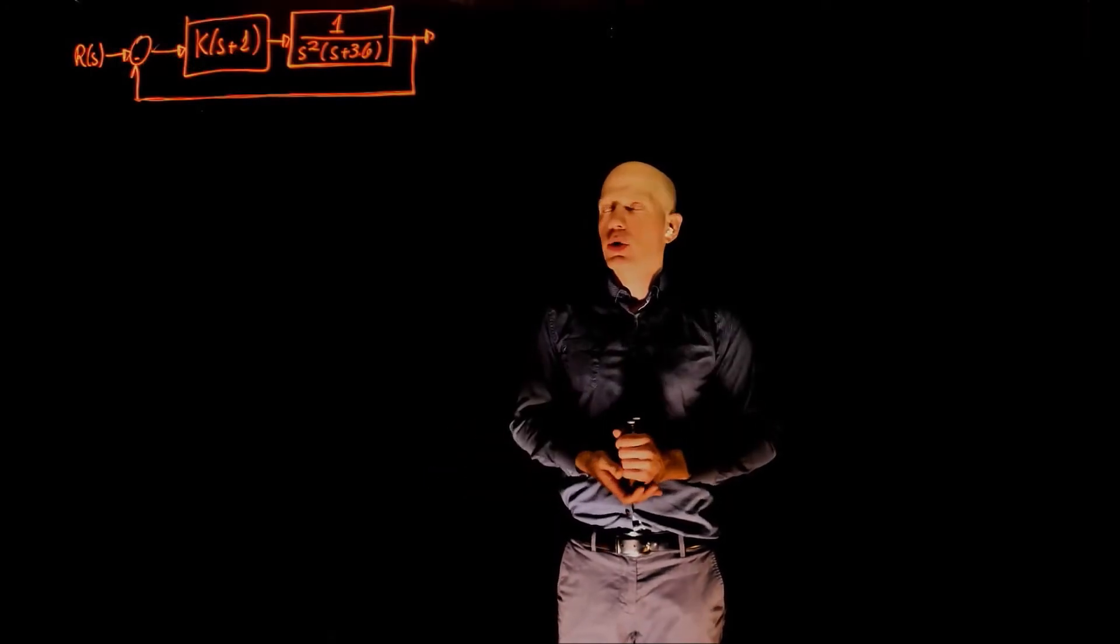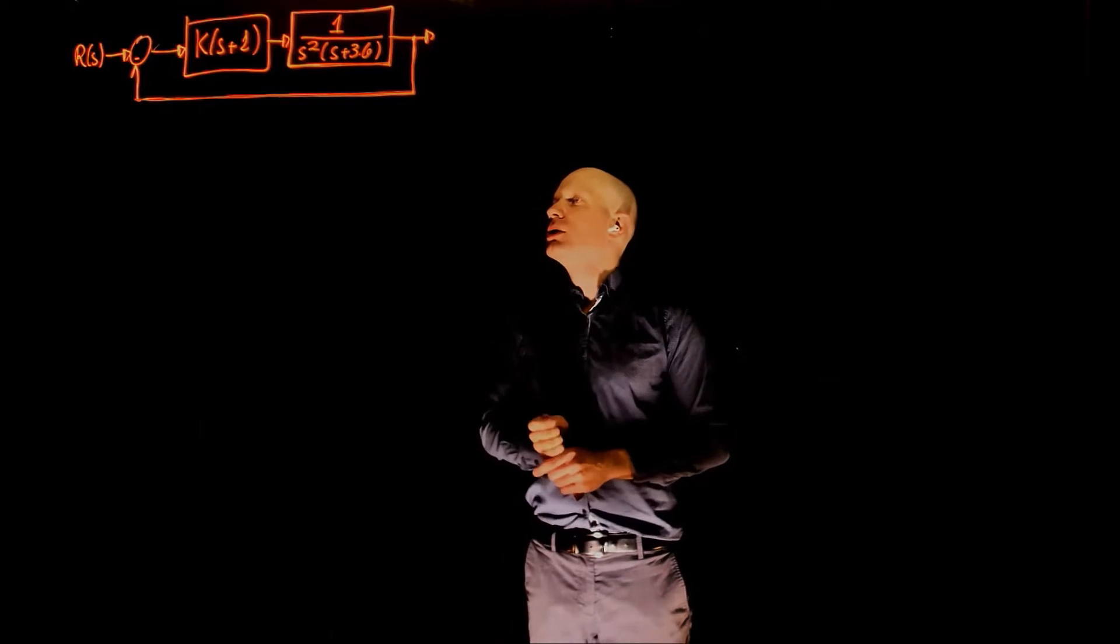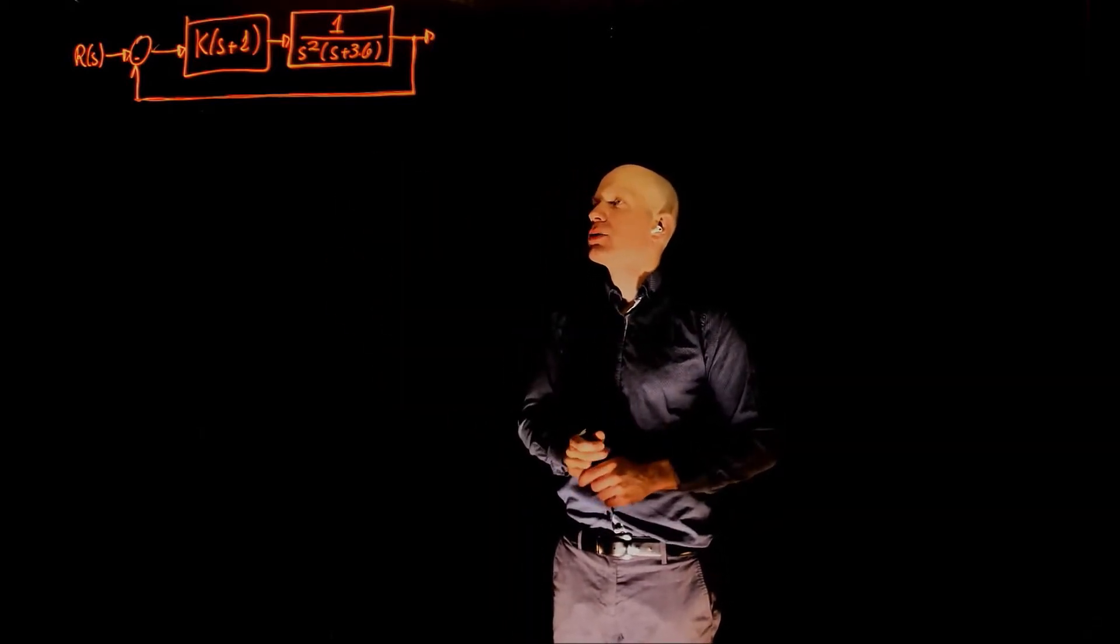Here we have another example of root locus. In this example, the controller is k times s plus 1, and the plant is 1 over s squared times s plus 3.6.